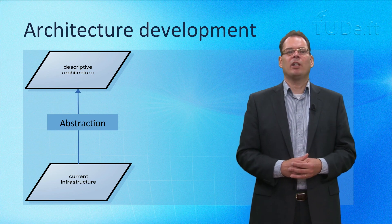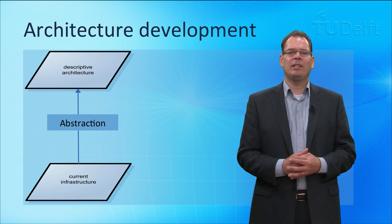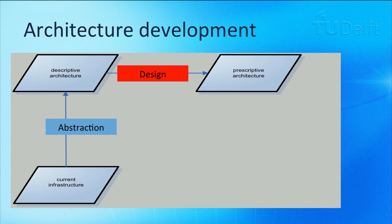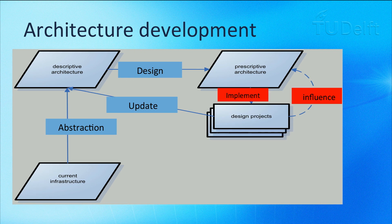A descriptive architecture is an abstract representation of the existing IT infrastructure. We can't change the landscape at once and we know in advance that our plans will not be realized as intended. A prescriptive architecture outlines the desired situation and is the result of design efforts. Often prescriptive architectures are staged — short-term views are more concrete and the long-term view is more like a vision. Implementing efforts are aimed at improving parts of the IT infrastructure and take into account the descriptive and prescriptive architectures. In turn, implementation projects change the infrastructure and therefore the descriptive architecture needs to be updated.